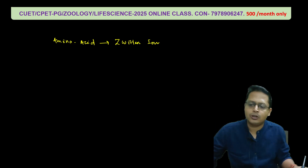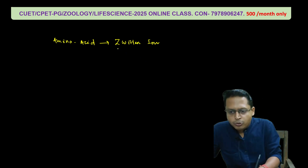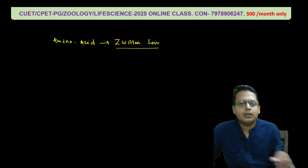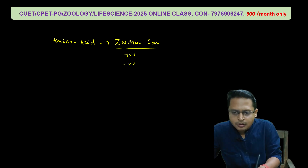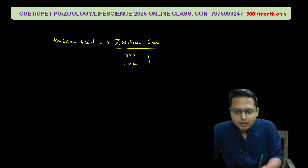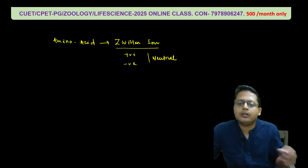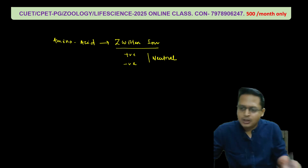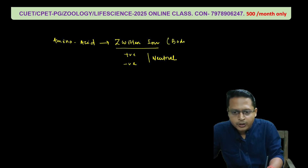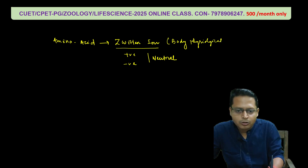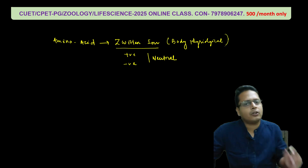Now, the zwitterion form — from which form does it come? The zwitterion contains both a positive charge and a negative charge. In maximum conditions, what condition does it take? In neutral or physiological conditions, the amino acid exists in the zwitterion form. At body physiological conditions, amino acids generally exist as zwitterions.